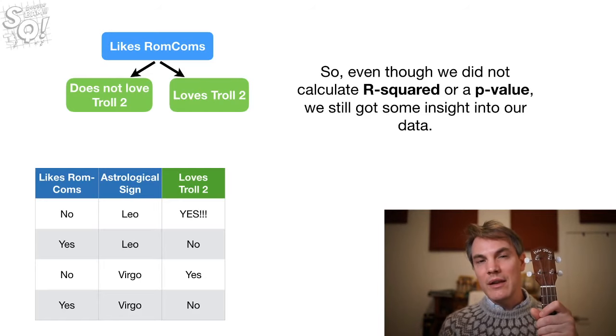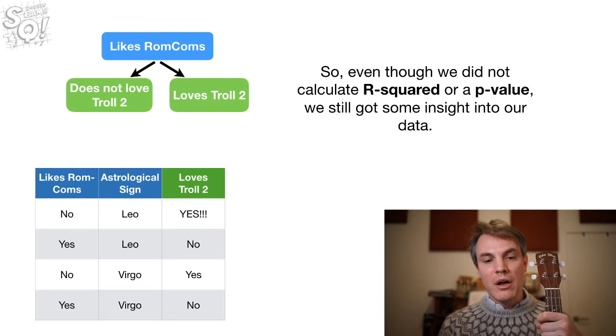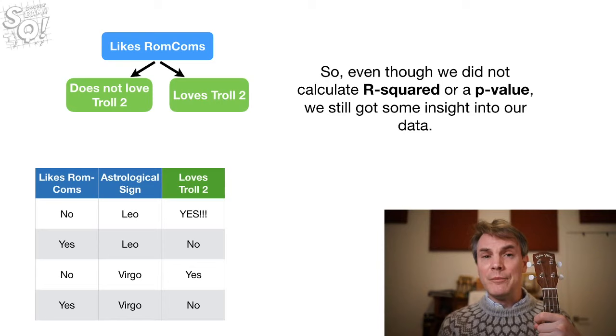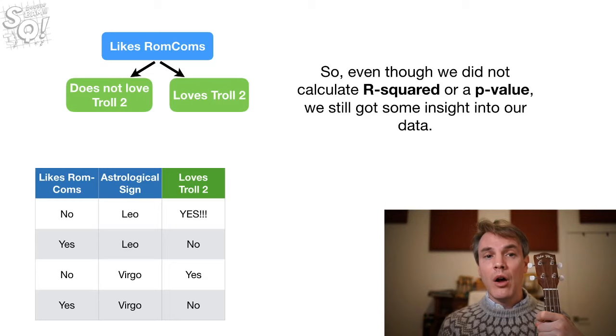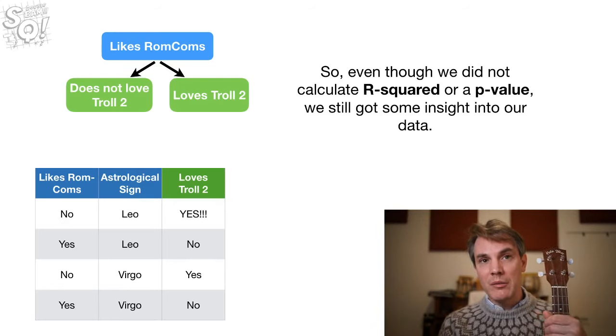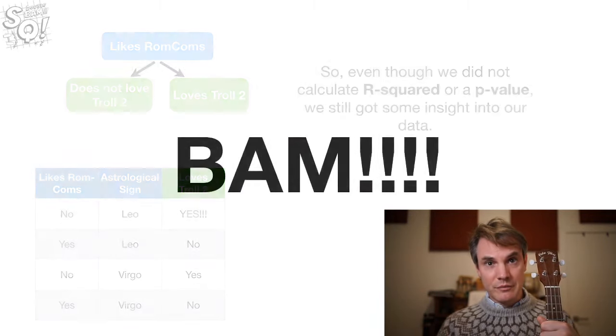So, even though we did not calculate R-squared or a p-value, we still got some insight into our data. So even the non-statistical-based methods can give us insight into our data. And so, we can use decision trees, regression trees, or random forest, stuff like that. If it gives us insight into our data, and a lot of those methods will, even without a p-value. And actually, I found myself using alternative methods. I'll do the traditional linear models approach. But I've also used some of these machine learning methods to get some insight into my data and not just make predictions all the time. So, that's a cool thing to do. Bam!